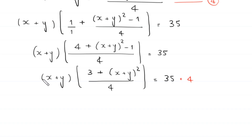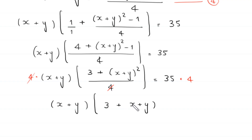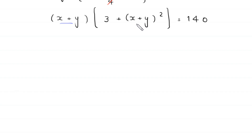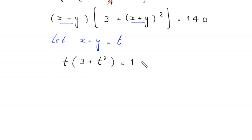We multiply both sides by 4, so the equation becomes x plus y times 3 plus x plus y whole squared equals 140. Now we let x plus y equal t. The equation becomes t times 3 plus t squared equals 140. Distributing t: 3t plus t cubed equals 140.